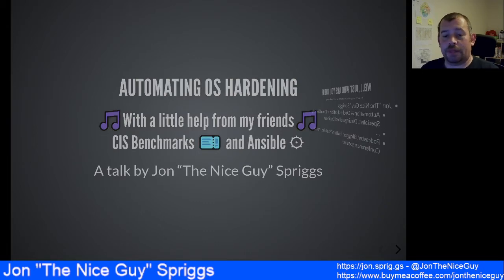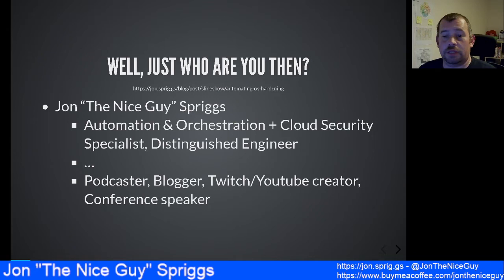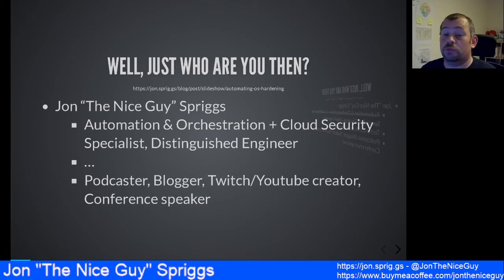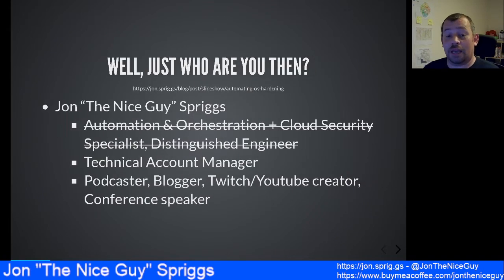As is fairly customary in talks like this, I should introduce myself. I'm John Spriggs, sometimes called John the nice guy. I'm an automation and orchestration specialist focusing mostly on cloud security. I'm also a distinguished engineer of the company who employs me — well, that was last week. As of next Monday, I'll be a technical account manager for a very large company.